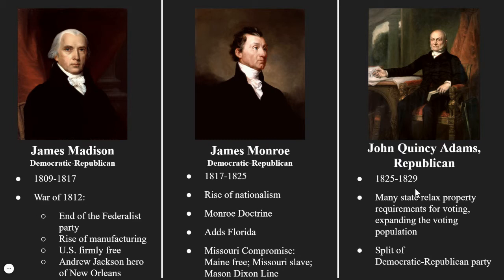Under James Monroe we also see the Missouri Compromise — a huge step in this walk toward civil war. It allows Maine to enter the Union as a free state and Missouri comes in as a slave state. It establishes what is known as the Mason-Dixon Line: north of it, any new states will enter the Union as free states; south of it, any new states will come in as slave states. This becomes a major piece in the battle between northern and southern states for control — the issue is not just slavery, but also representation in Congress.